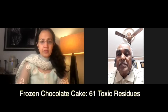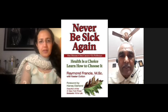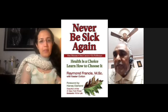Frozen pizzas were found to have 67 industrial and pesticide residues. Frozen chocolate cake contains 61 toxic residues. Milk chocolate had 93, and peanut butter had a whopping 183 residues, including the highly carcinogenic aflatoxin produced by a mold that grows on peanuts. This information comes from an excellent book called 'Never Be Sick Again' — written by a non-doctor.